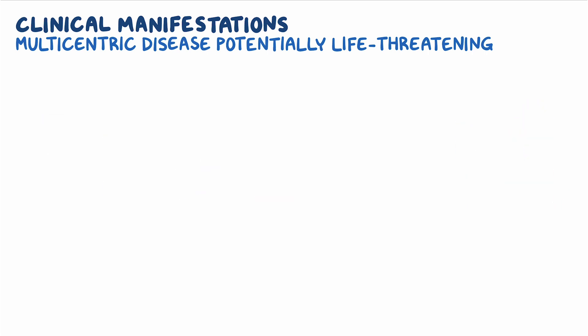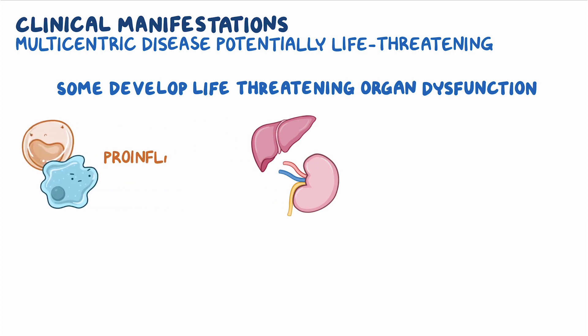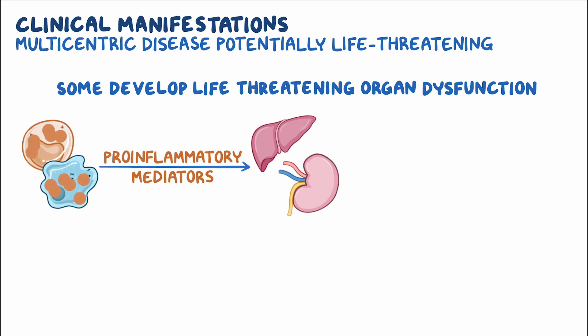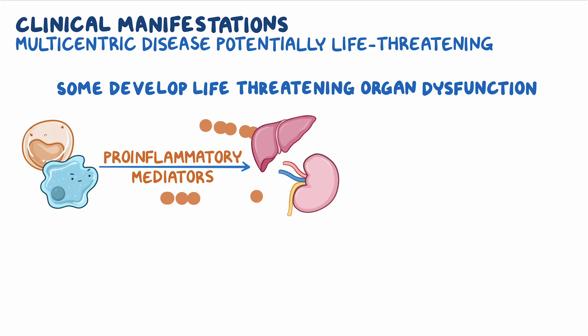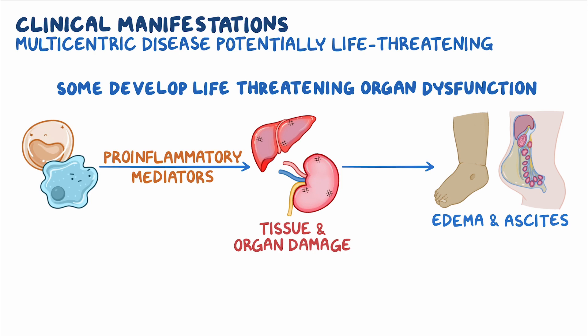Although it is unclear why, some individuals with multicentric Castleman disease develop life-threatening organ dysfunction caused by a sudden and massive release of pro-inflammatory mediators, leading to significant tissue inflammation and organ damage. This may result in liver and kidney dysfunction and symptoms of fluid accumulation in the body, such as edema and ascites, or excess fluid in the abdomen.